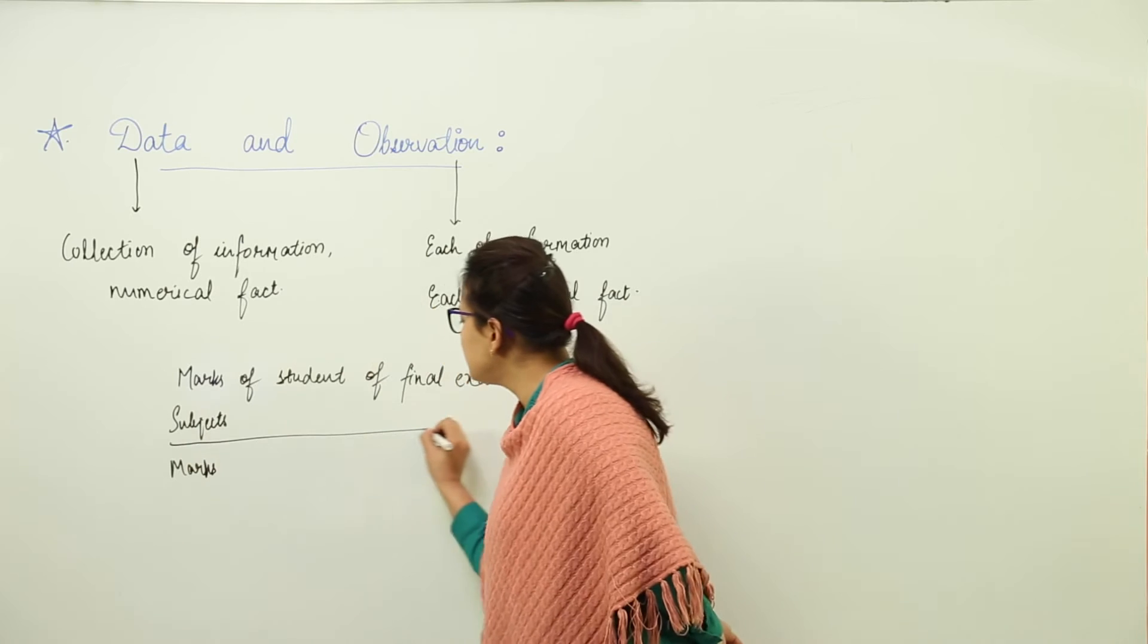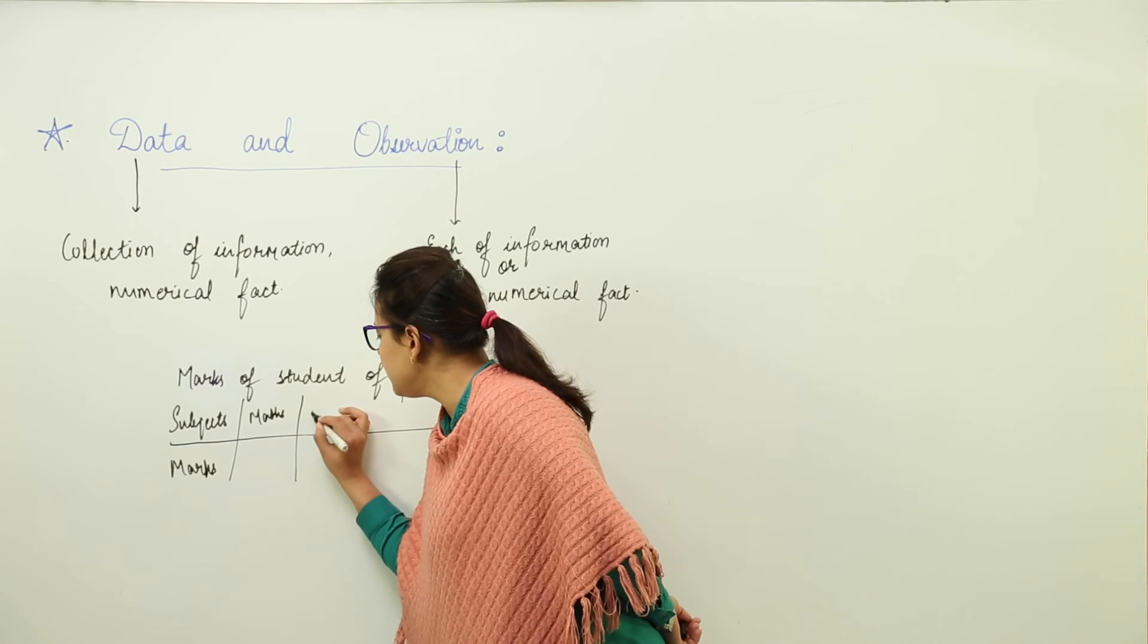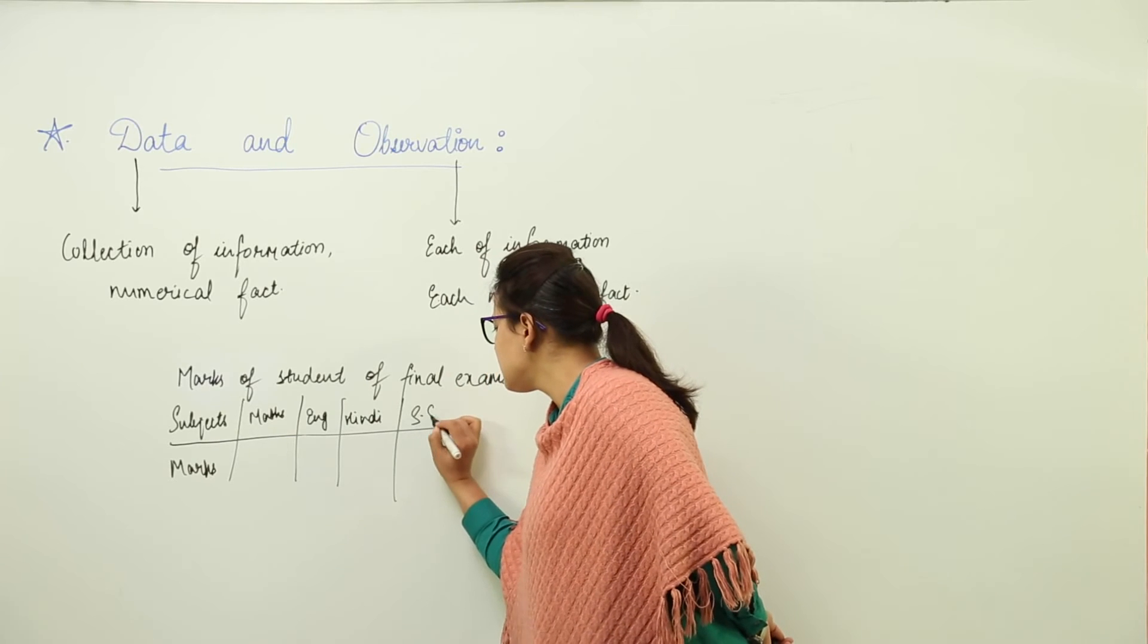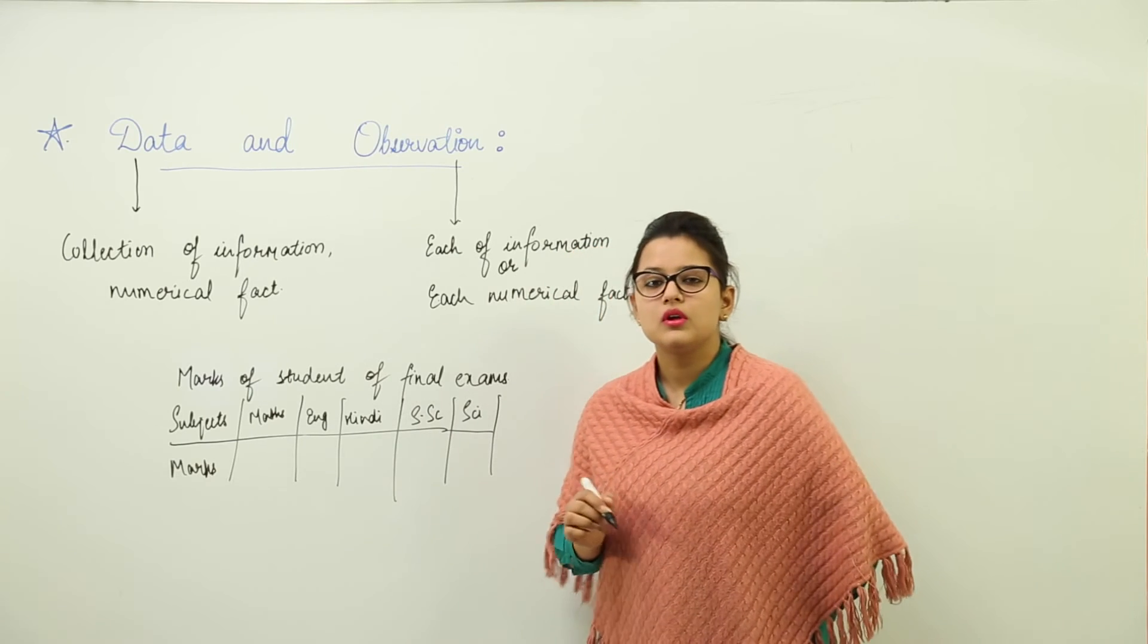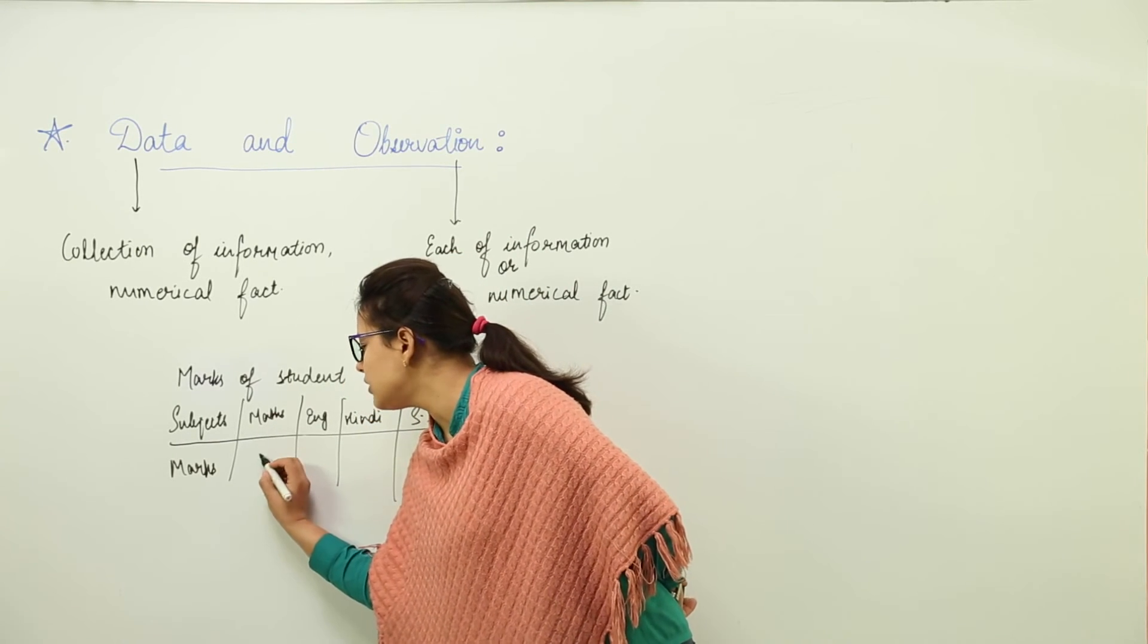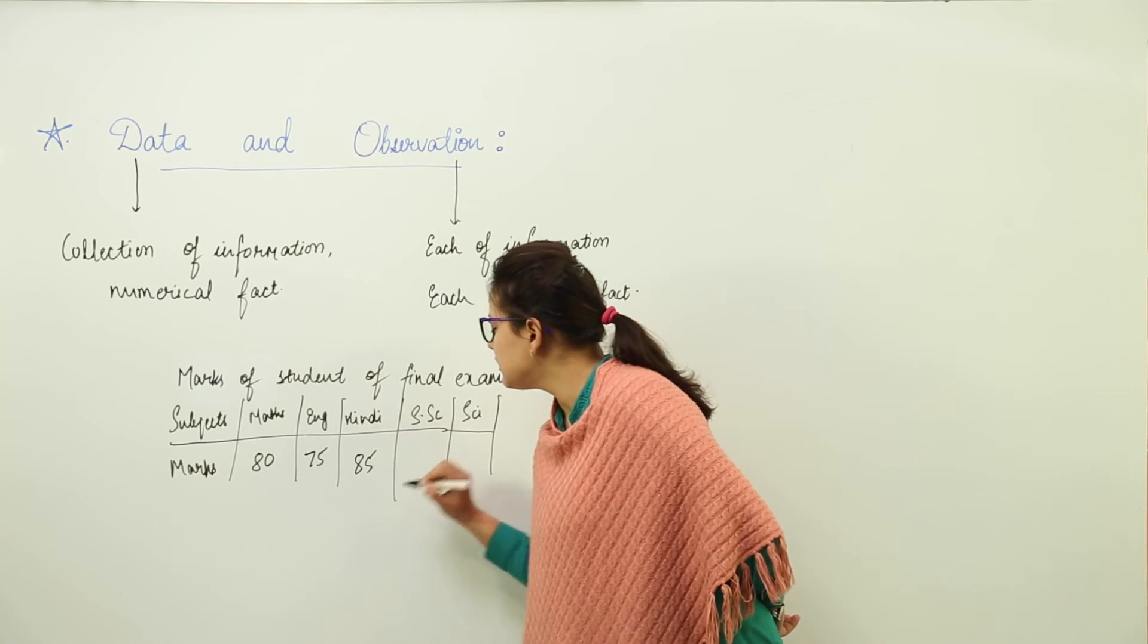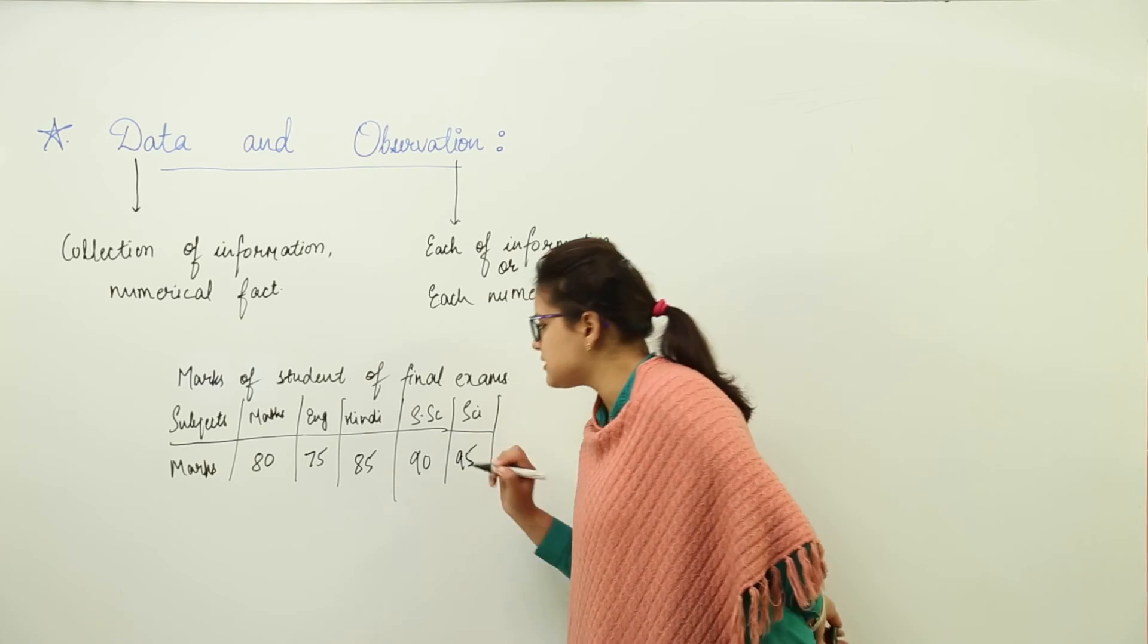The marks are out of 100, and we have five subjects: maths, English, Hindi, social science, and sciences. Now we have the five subjects. Let us assume some marks. The student has secured 80 marks out of 100 in maths, 75 in English, 85 in Hindi, 90 in social sciences, and 95 in sciences.